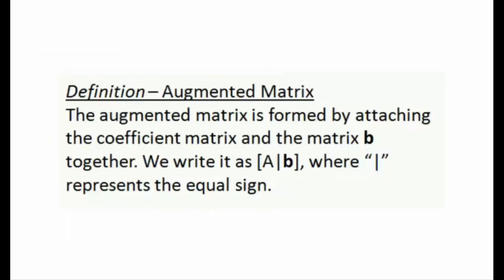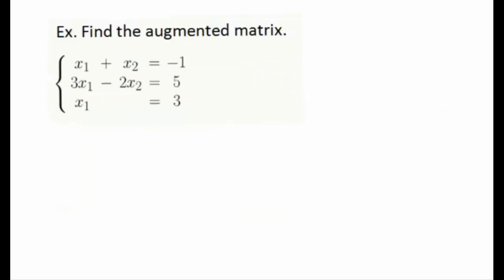The last idea to introduce in this video is what we call the augmented matrix. To form the augmented matrix we take the coefficient matrix A and extend it by one column. The augmented matrix is A extended with the column b. When writing augmented matrices I use a vertical line in the middle to represent where the equal sign is. Now let's take a look at how to find the augmented matrix by considering a system in matrix form with variables x1 and x2.